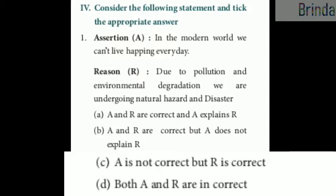Option C — assertion is not correct but reason is correct. Option D — both assertion and reason are incorrect. The answer is B: assertion and reason are correct, but assertion does not explain reason.